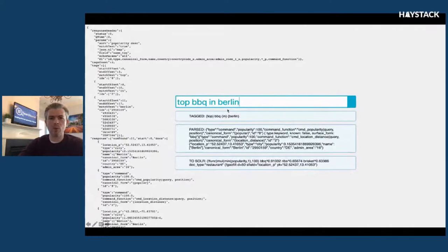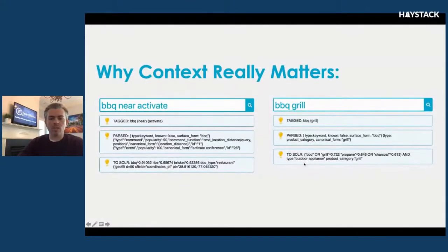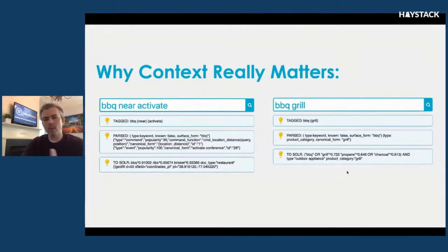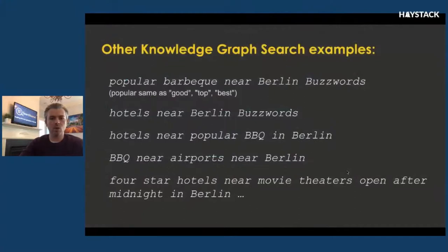Similarly, a query for 'top barbecue in Berlin' realizes that 'top' means a boost on popularity of documents. We talked about transformer models and where context really matters. When I search for 'barbecue near activate' the graph understands I'm looking for a restaurant, but if I search for 'barbecue grill' it understands a different meaning — grill as outdoor equipment. The same kind of nuance we get with thought vectors in transformer models, we can actually get through knowledge graphs as well, if we construct them appropriately. With a knowledge graph approach, answering a query like 'four star hotels near movie theaters open after midnight in Berlin' is something we can handle pretty easily, whereas with either keyword search or thought vectors, that would be challenging.